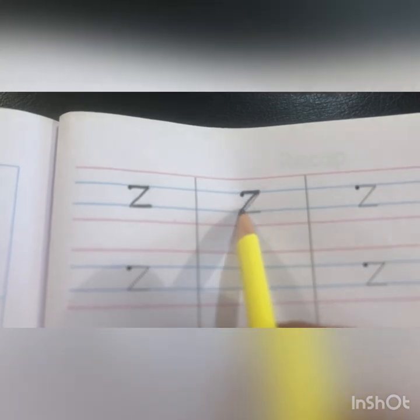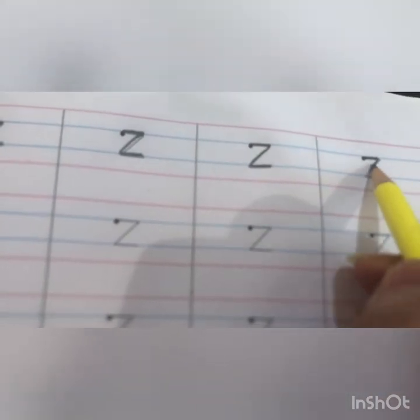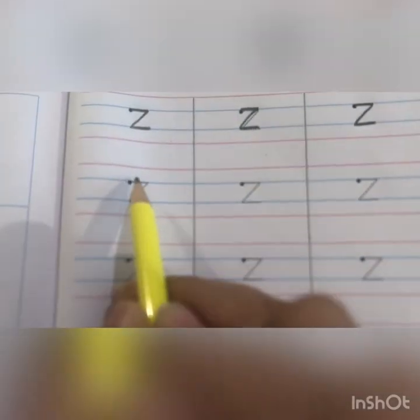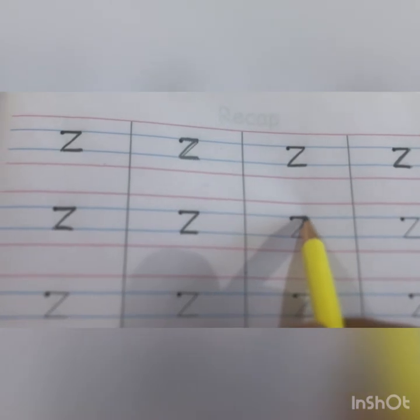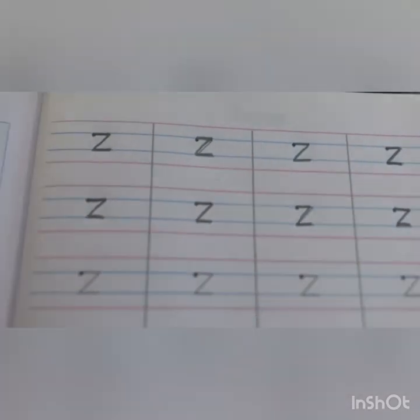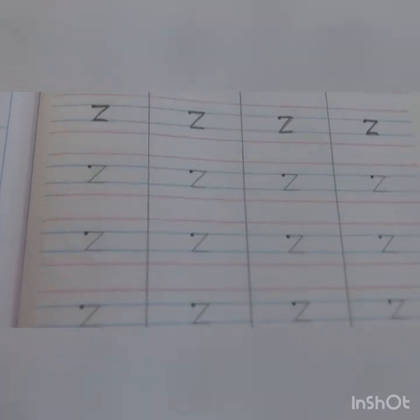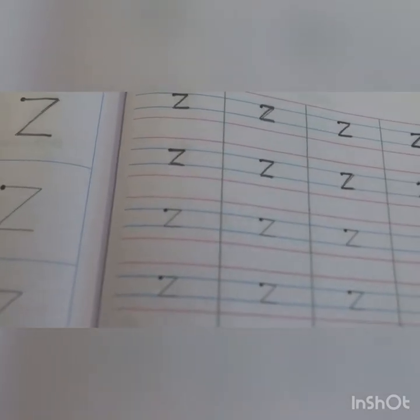So come on, we just have to trace. Sleeping line, slanting line, sleeping line — Z! Sleeping line, slanting line, sleeping line — Z! Okay children, I hope the home fun activity was clear. Complete the entire page of tracing letter Z, and till we meet again, bye children, take care!